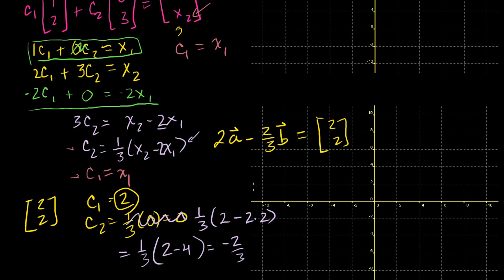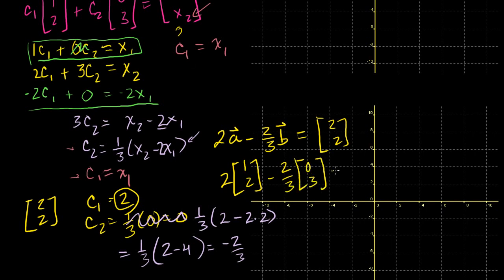And you can verify it yourself: 2 times my vector a, [1, 2], minus (2/3) times my vector b, [0, 3], should equal [2, 2].